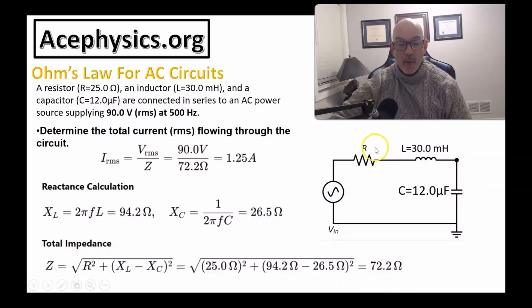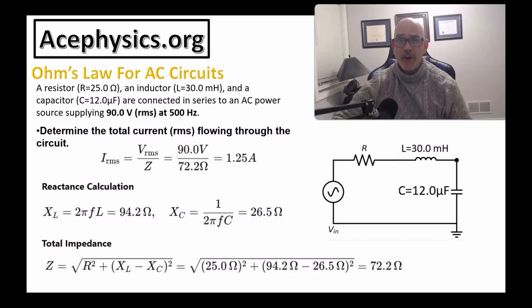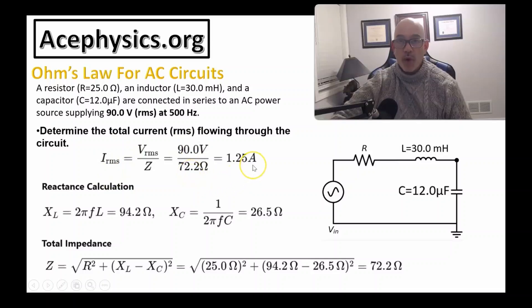That's considerably more than the resistor alone at 25 ohms. Notice that the inductor and capacitor act as impedance and suppress the amplitude of the current. Therefore, the RMS current flowing through the circuit is 90 volts divided by 72.2 ohms, which equals 1.25 amps.